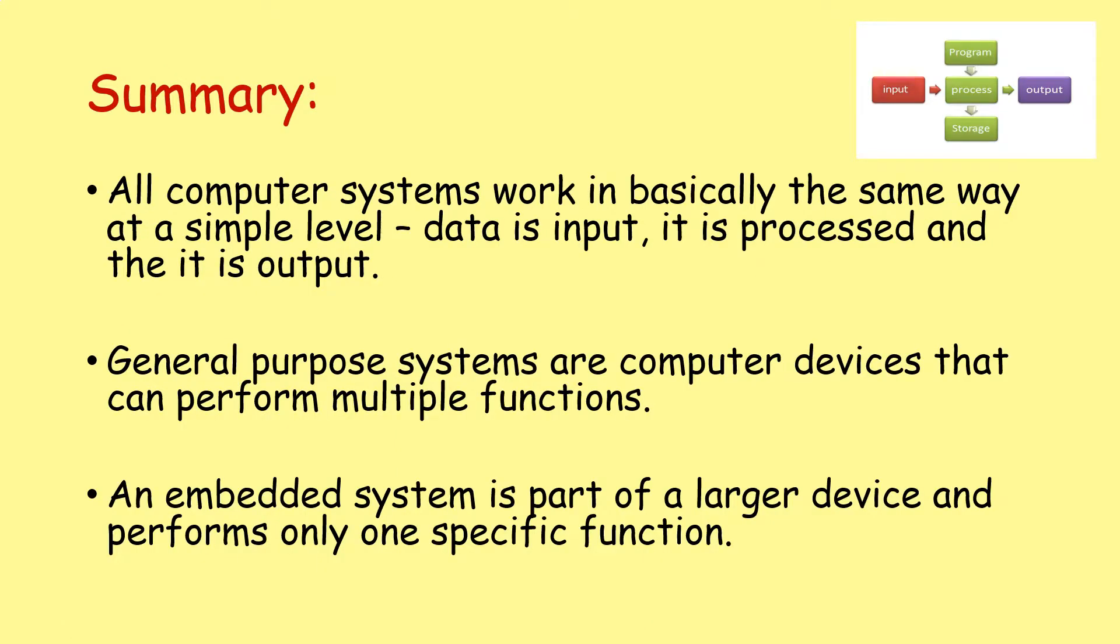So let's summarize today's very basic, very quick lesson. All computer systems work in basically the same way at a simple level. Data is input, it is processed and then it is output. We can divide computer devices into two basic categories. General purpose systems are computer devices that can perform multiple functions, and embedded systems are part of larger devices and perform only one specific function.